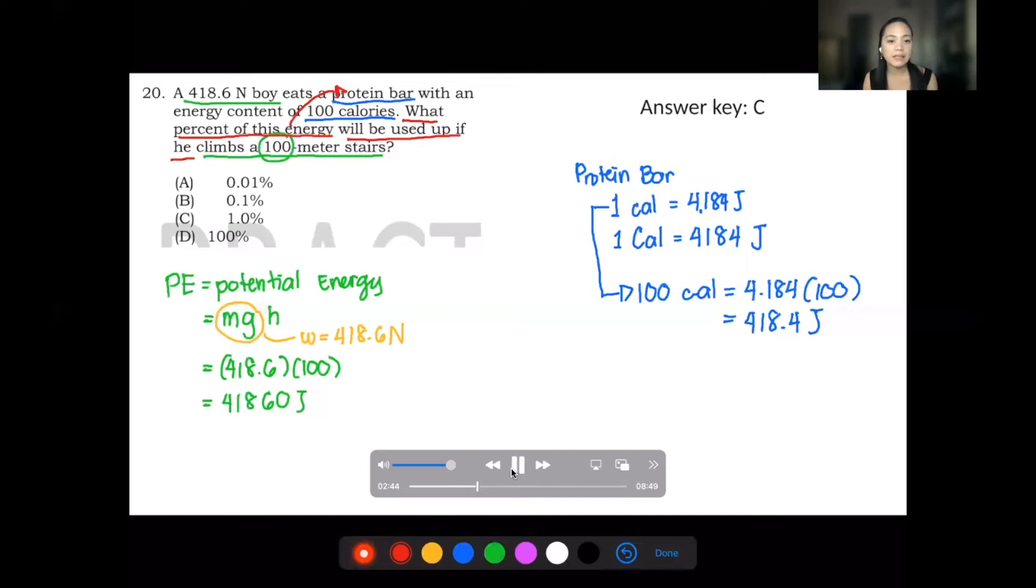Now, the problem is asking what percent of energy will be used up if he climbs 100 meters stairs. So we're talking about the bar energy. How much of the bar energy will be used? So we have potential energy divided by the bar energy times 100%. So if you divide that, we've computed the values.